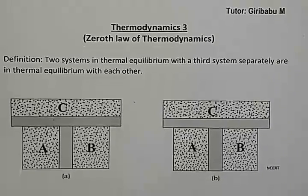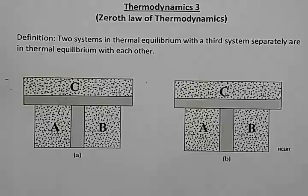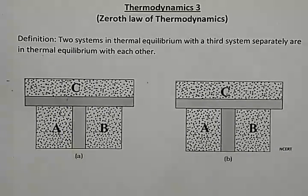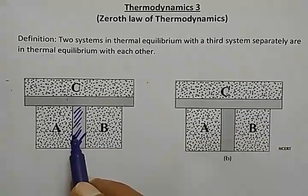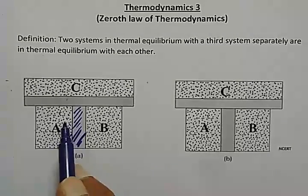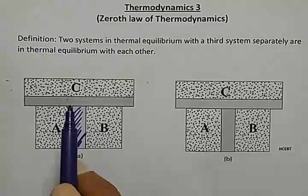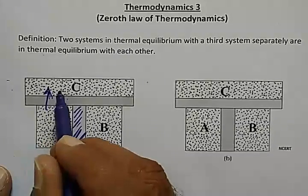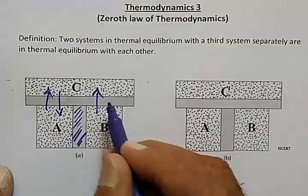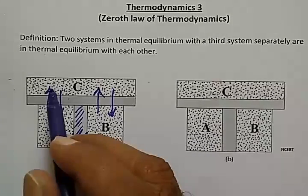To understand this, let us imagine three systems A, B, and C. We will isolate them with adiabatic walls, which do not allow energy to flow in either direction. We assume both A and B are in contact with system C through a conducting wall, so energy can flow from A to C, C to A, B to C, and C to B.